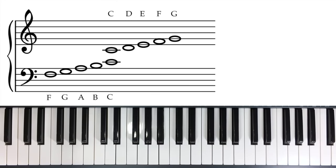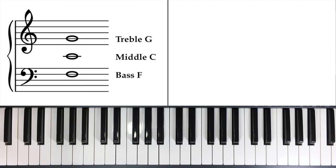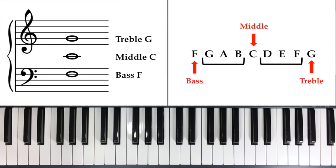Middle C is the first ledger line above bass clef, and the first ledger line below treble clef. So a lot of people when talking about landmarks write out three landmarks like this. Middle C looks the same in bass clef and treble clef, so it's just right there in the middle.